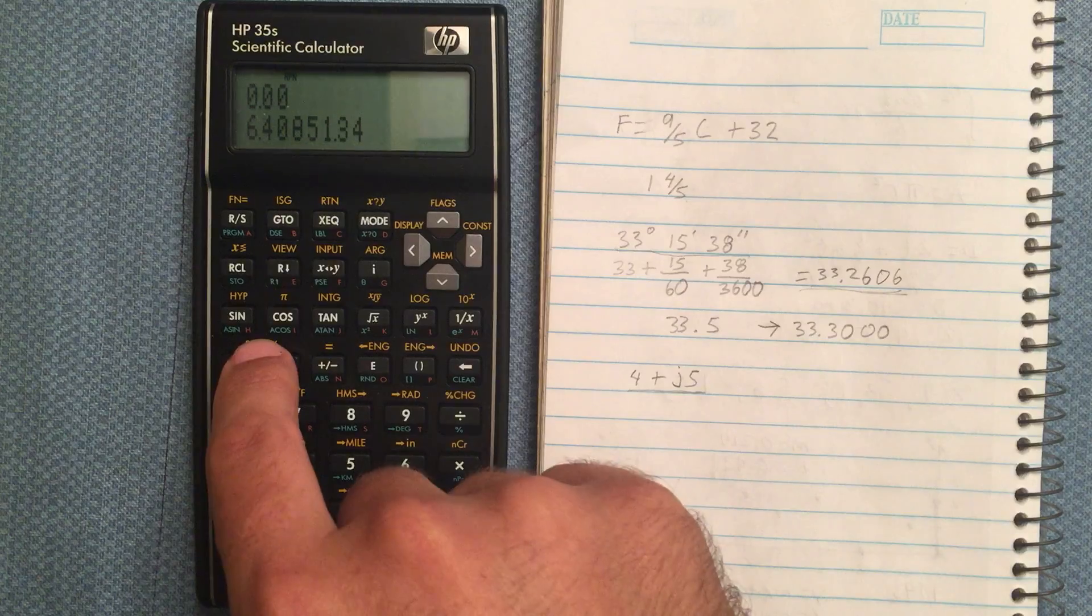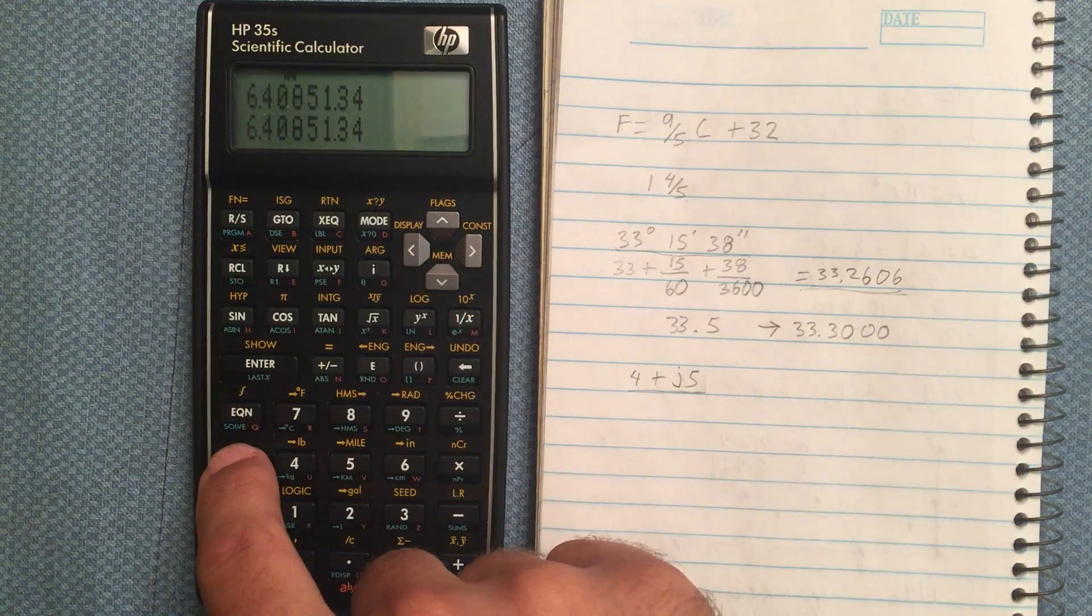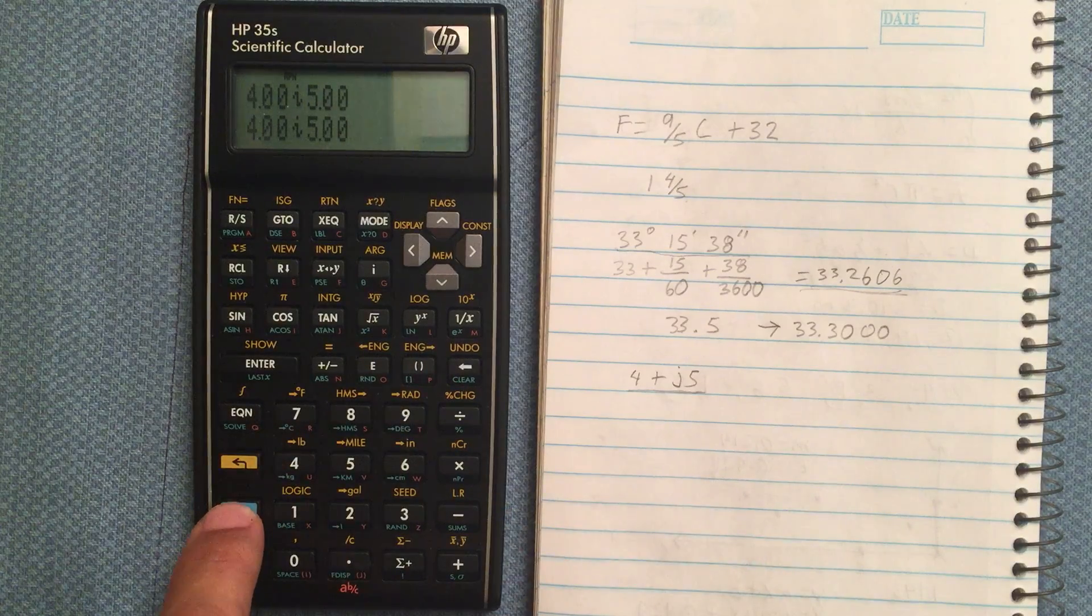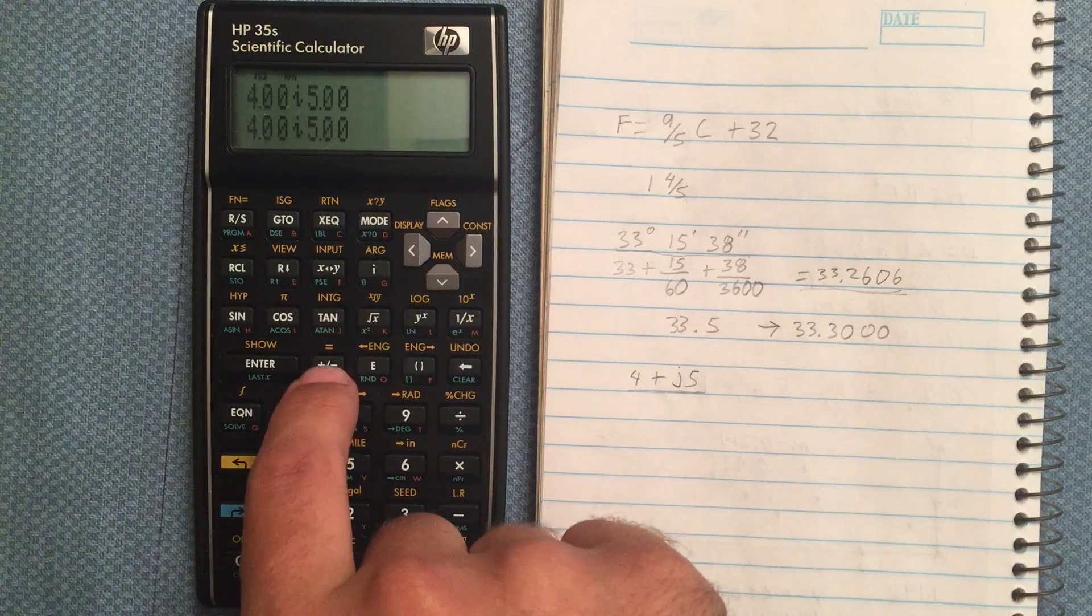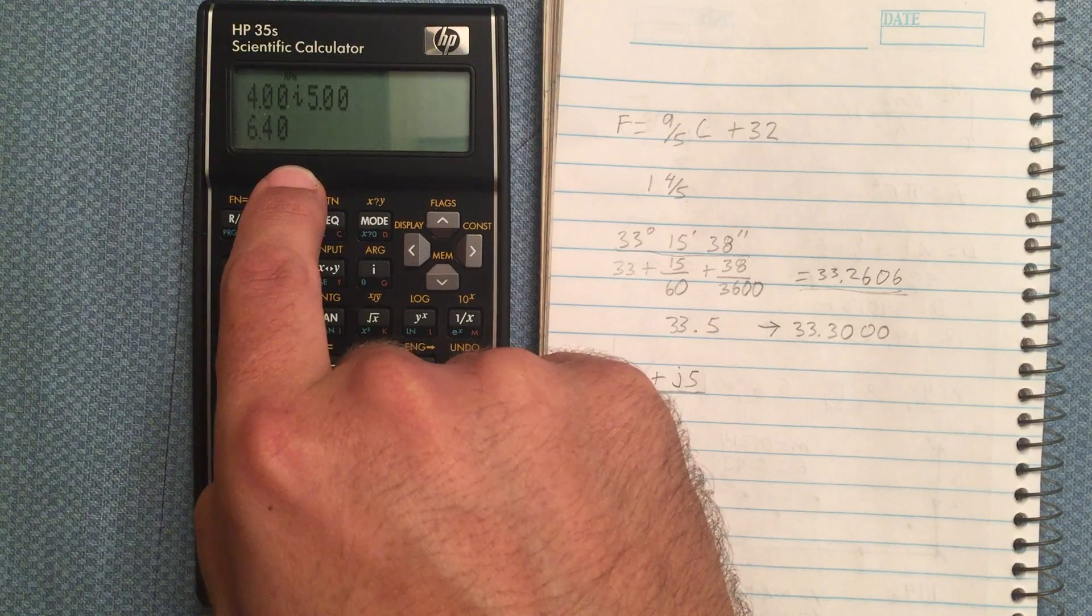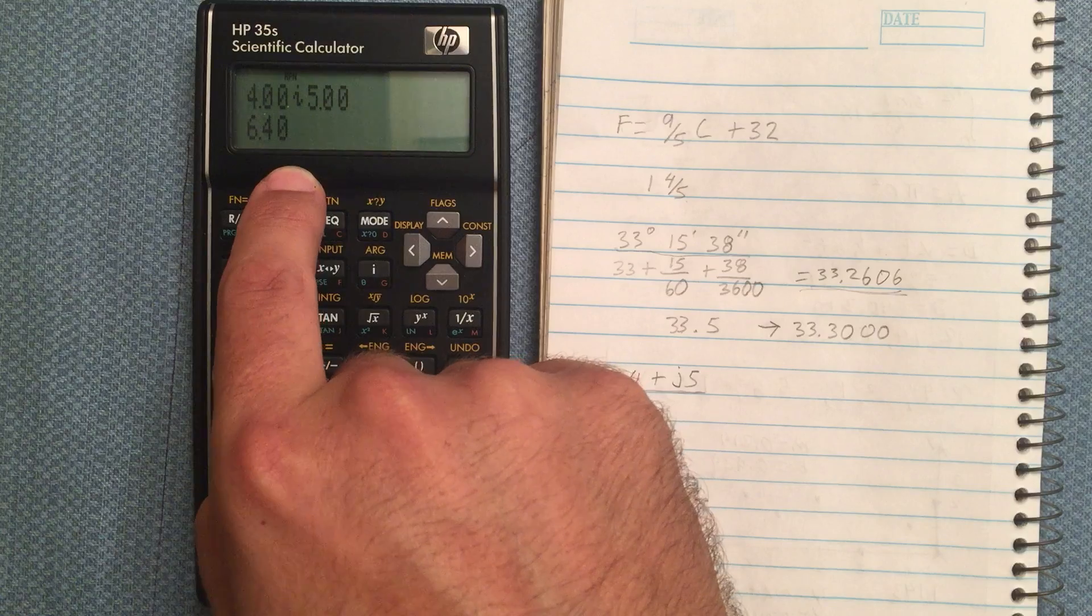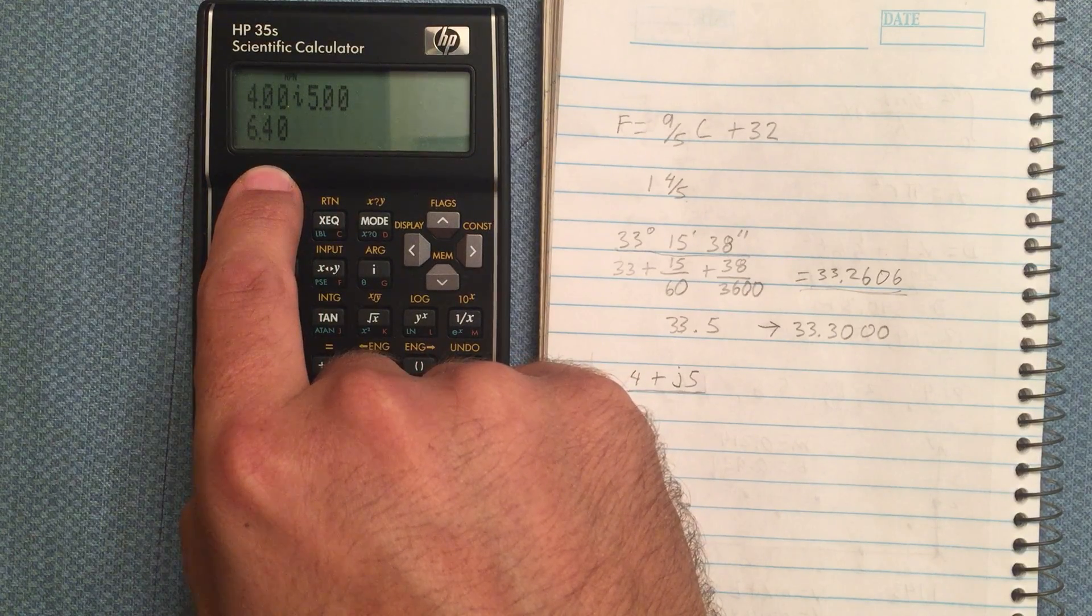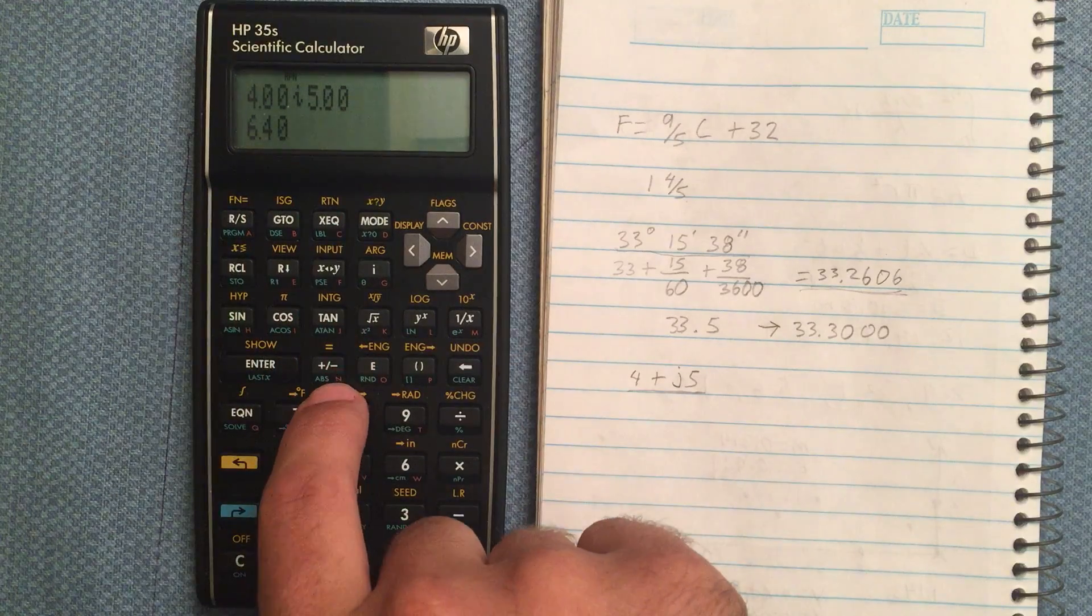So for example, let's just make a copy of that, and we'll go back to rectangular mode. Now I can take the absolute value, and that gives me the magnitude. So if I'm just calculating the magnitude, say for example, like a voltage, and I just want the magnitude of the voltage, I don't care about the angle, then I'll go ahead and do the absolute value.